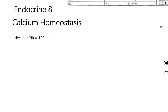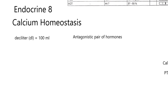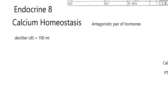Now back to calcium homeostasis. We have to talk about two hormones, and these hormones do opposites — they have opposite actions. So you could call them an antagonistic pair of hormones. There are other antagonistic pairs of hormones in the body, but in this case, what one hormone does, the other one does the opposite.